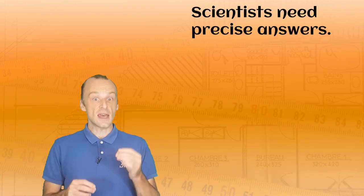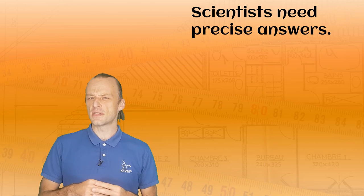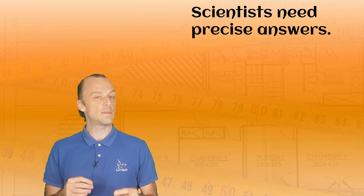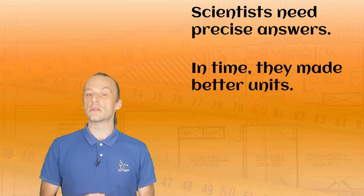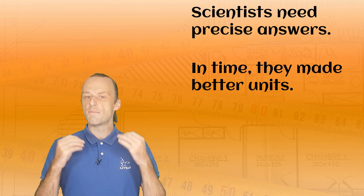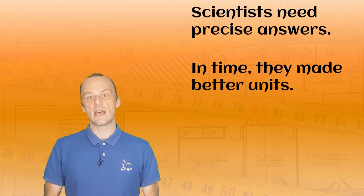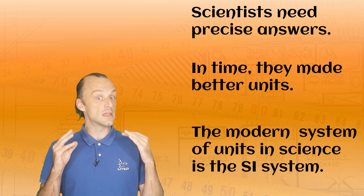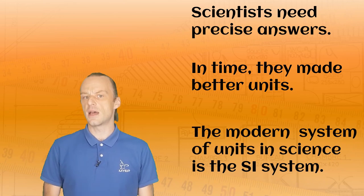Today, though, scientists need to make very precise measurements, and so they need to be extremely exact in their numbers. Over time, we have made better and better units, and the modern system of units in science is the SI system.